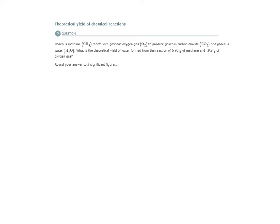Theoretical yield of chemical reactions. Gaseous methane reacts with gaseous oxygen gas to produce gaseous CO2 and water. What is the theoretical yield of water formed from the reaction of 6.9 grams of methane and 19.8 grams of oxygen gas?